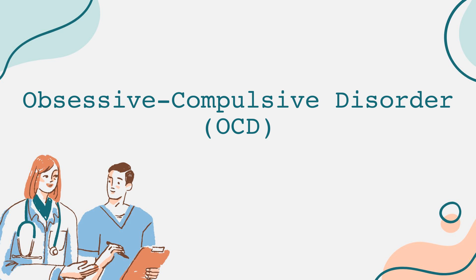Living with OCD can be challenging, but there are several strategies that individuals can use to manage their symptoms. First, building a strong support system with friends, family, or support groups can make a significant difference. Open communication about feelings and struggles helps reduce feelings of isolation. Mindfulness practices, such as meditation and deep breathing, can also aid in managing symptoms of anxiety linked to OCD.